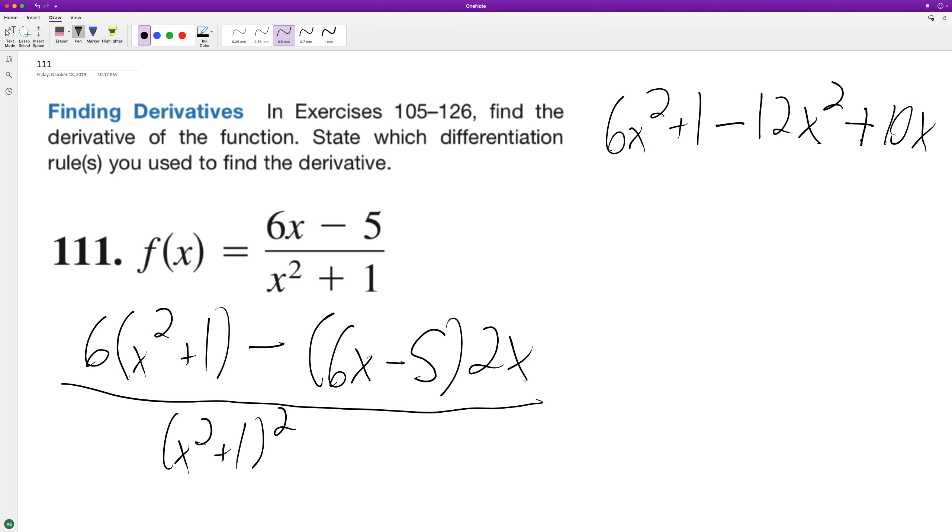I'll just skip that step for now. This ends up being negative 6x squared plus 10x plus 1, all over x squared plus 1 squared.